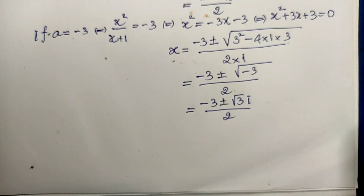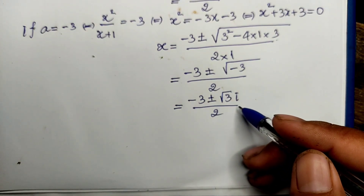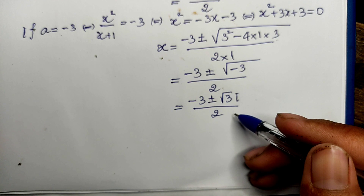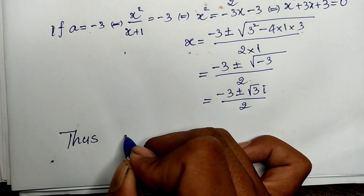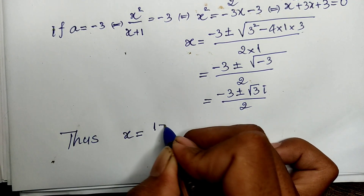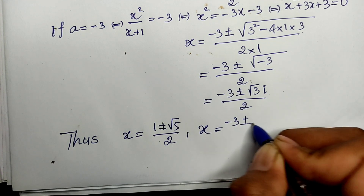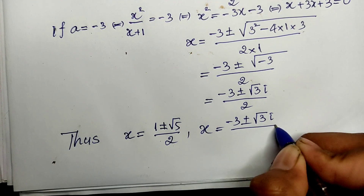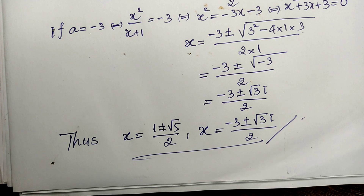So we have four values of h in total: two real solutions and two complex solutions. The real solutions are h equals (1 plus or minus square root of 5) divided by 2, and the complex solutions are h equals (minus 3 plus or minus square root of negative 3) divided by 2. Thank you for watching. Please don't forget to subscribe, like, and share the video. Goodbye.